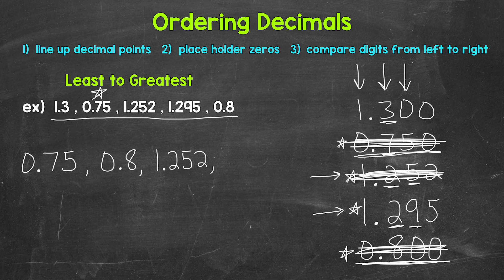So let's compare digits. We have ones in the ones place. So let's move over to the tenths. We have a three in the tenths and a two in the tenths. Two is less than three. So one and 295 thousandths comes next.